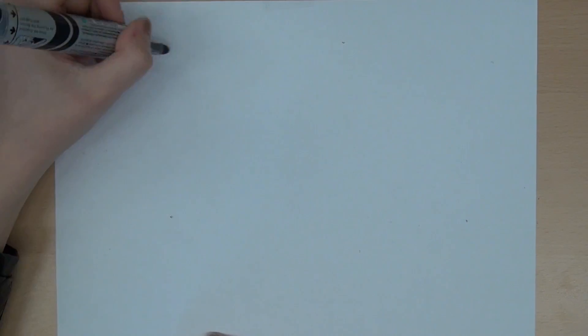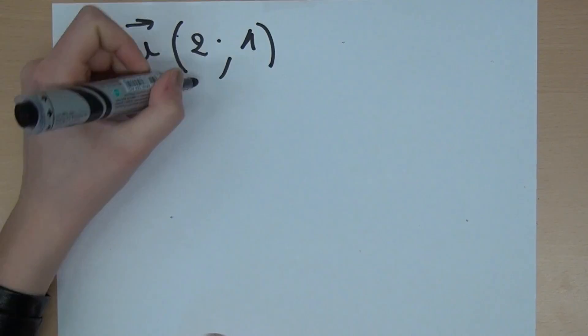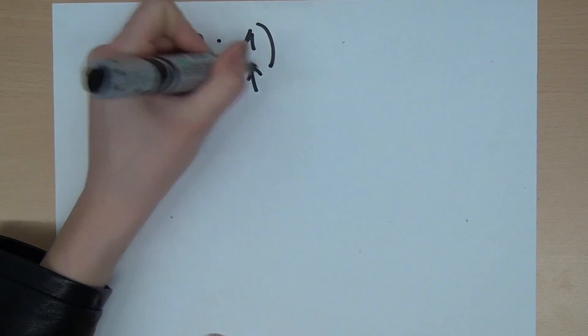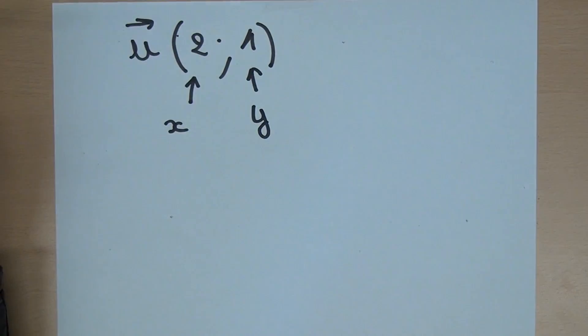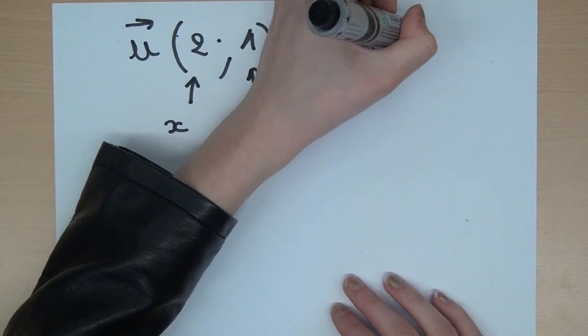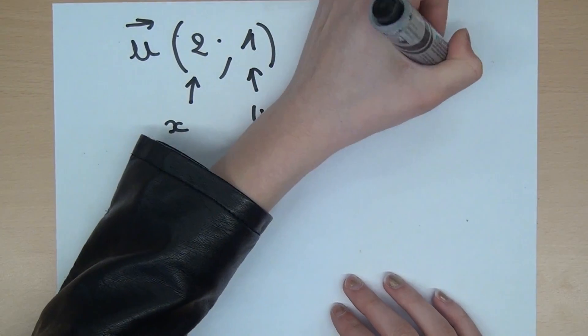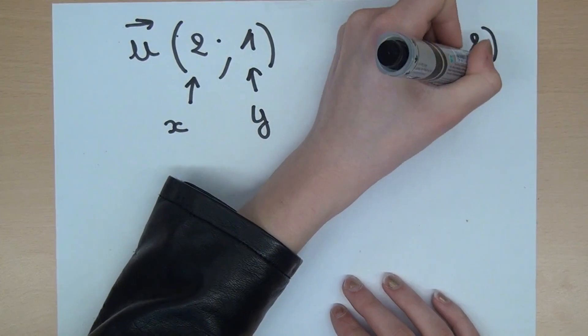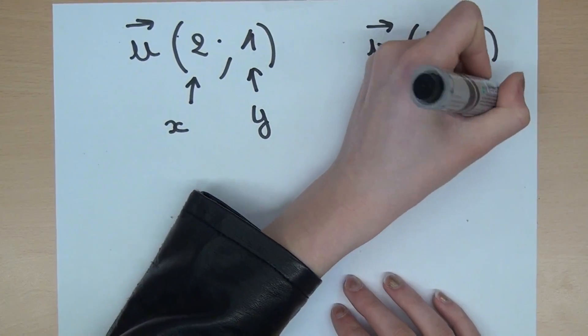For instance, if we have u(2, 1), 2 is x and 1 is y. And v(4, 2), 4 is x' and 2 is y'.